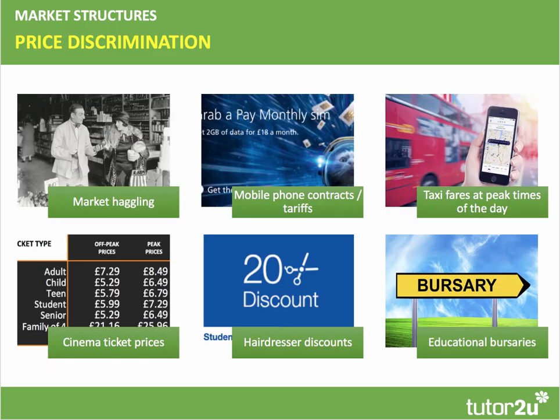Price discrimination is when businesses charge different prices to different groups of consumers for essentially the same product. The key is that when a firm is doing this, it's trying to separate the market out — instead of charging one uniform profit-maximizing price, it will engage in dynamic pricing.